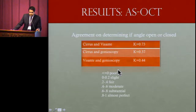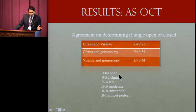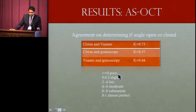Looking at agreement on determining whether the angle was open or closed, Cirrus and Visante agreed with each other substantially. However, comparing Cirrus to gonioscopy and Visante to gonioscopy independently, that agreement dropped to only moderate ranges.